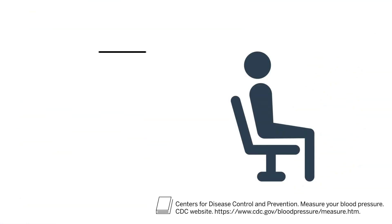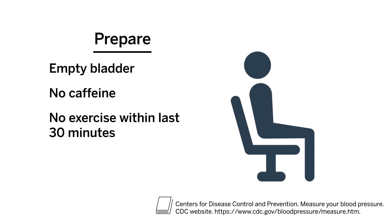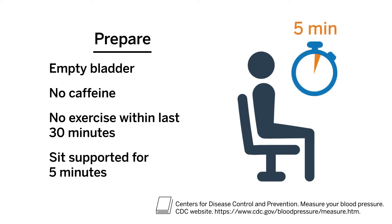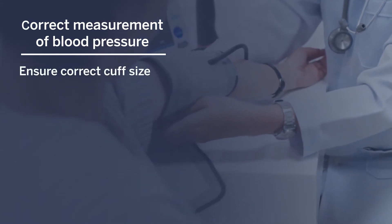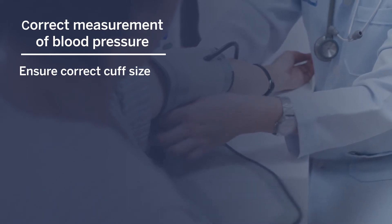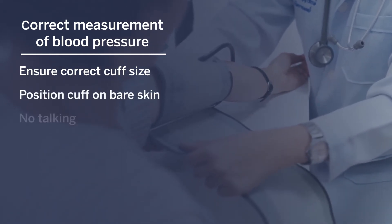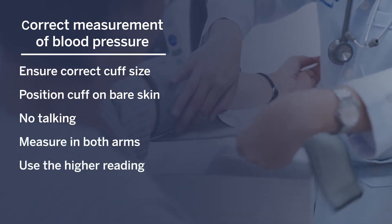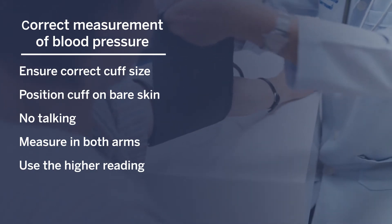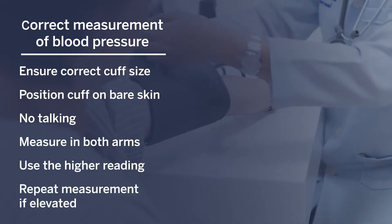Correct measurement of blood pressure is important when evaluating and managing patients. First, prepare: ideally, the patient should have an empty bladder and not have consumed caffeine or exercised within the last 30 minutes. The patient should sit supported for at least five minutes with feet on the floor and back well supported. Ensure the correct cuff size and that 80% of the cuff's bladder fits around the patient's upper arm. The cuff should sit on bare skin, and there should be no talking during measurement. Measure blood pressure in both arms and use the higher reading to guide medical decision making. If the blood pressure is elevated, repeat measurement after at least one to two minutes.